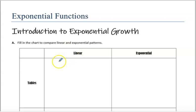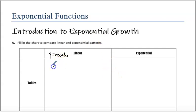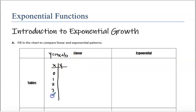We just came out of the linear unit. Hopefully linear you're thinking y equals mx plus b. And if we created ourselves a table here, we can start with any x values. I'm going to start with 0, 1, 2, 3, 4, and we'll go to 5. And start with any y value.